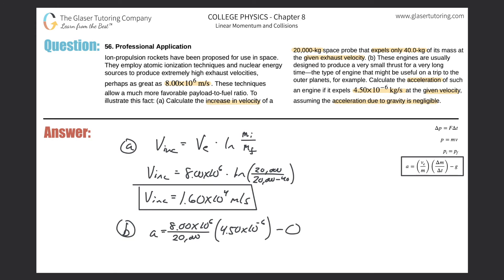Plugging in the values: 8 times 10 to the 6, divided by 20,000, times 4.5 times 10 to the minus 6. The result is 1.8 times 10 to the minus 3 meters per second squared. Thanks for tuning in — please remember to subscribe, and I look forward to helping you with the next question.